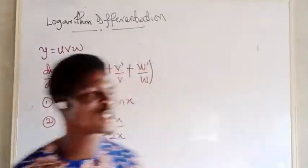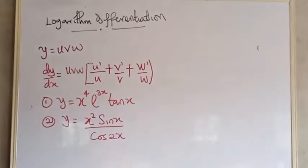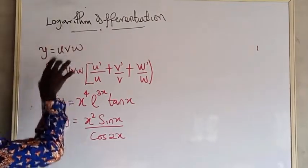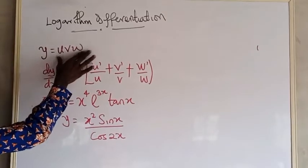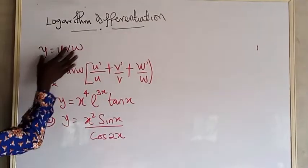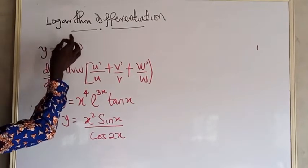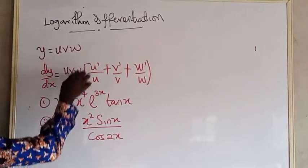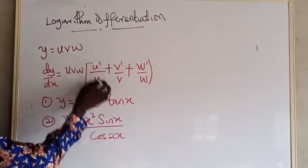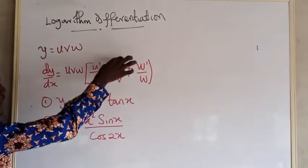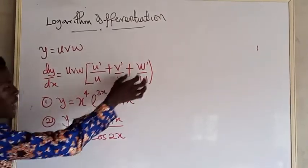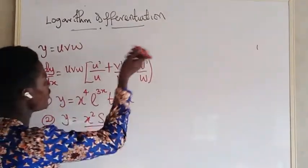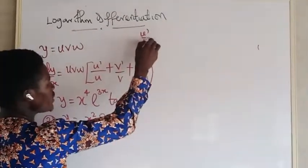Today I want to show you the shortcuts to solving questions on logarithmic differentiation. Logarithmic differentiation involves functions with more than two terms. So if I have a function like y equals uvw, the derivative of uvw would be uvw multiplied by u prime over u, plus v prime over v, plus w prime over w. These terms come from the concept of ln — u prime over u is the same as ln(u).